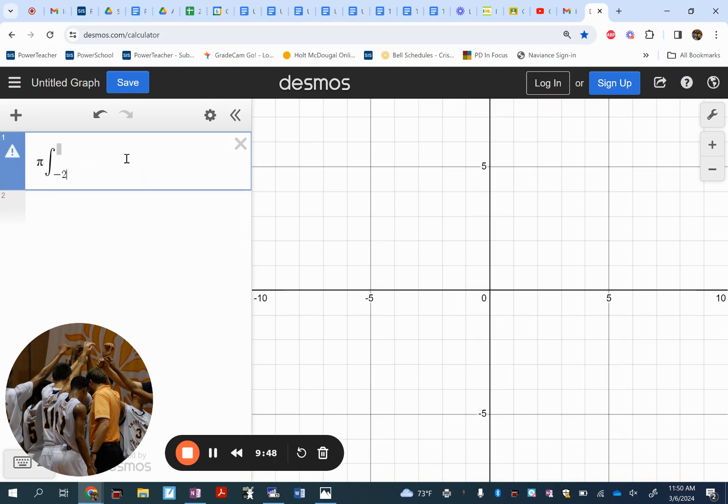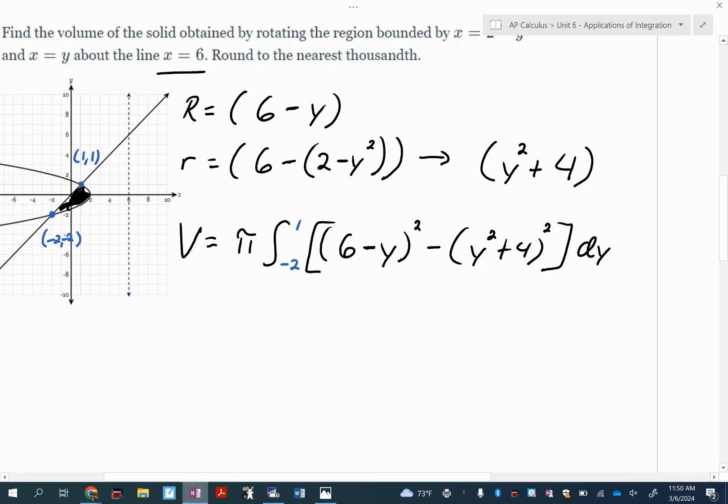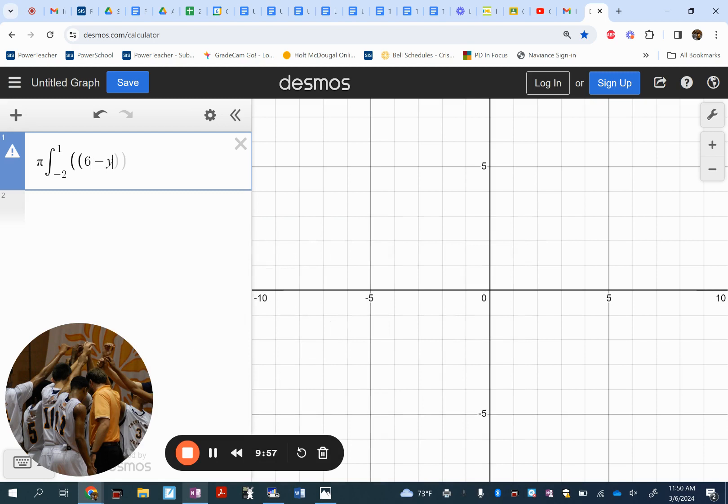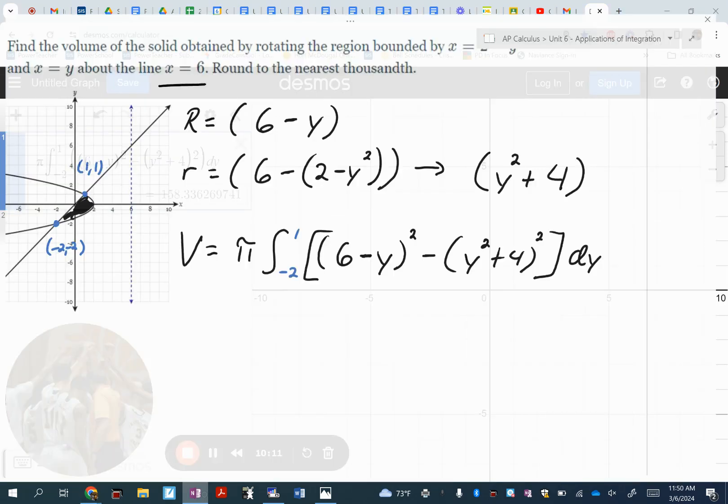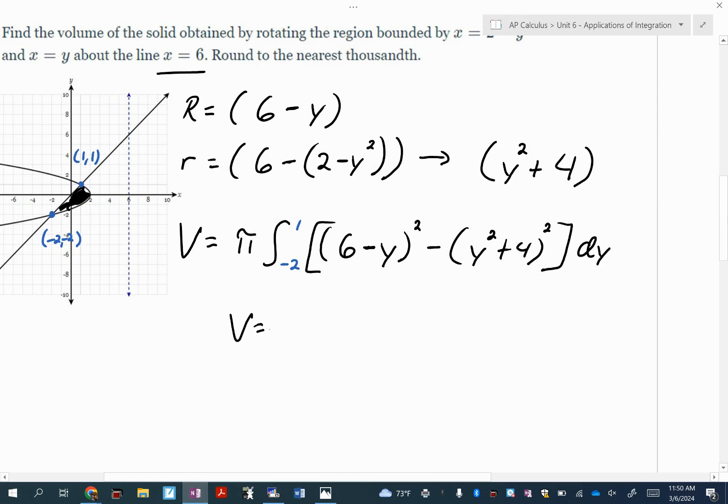All right. Let's go to the calculator and type it in. All right. Six minus Y, all of that squared, minus, is it Y squared plus four? Yes. Thank you. All right. So 158.336. What's wrong? No, no, no, it's not.